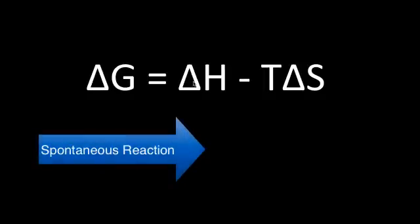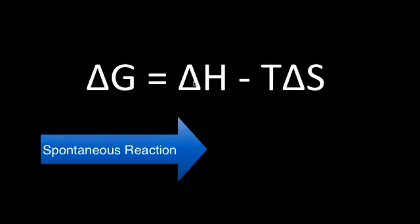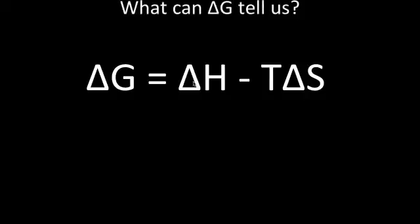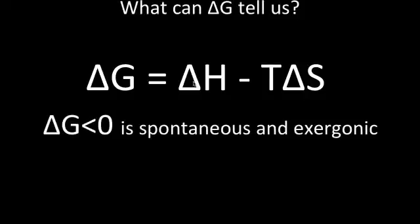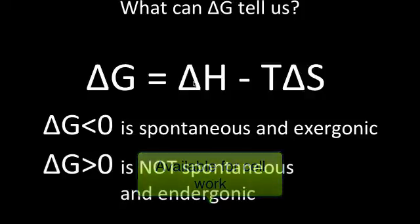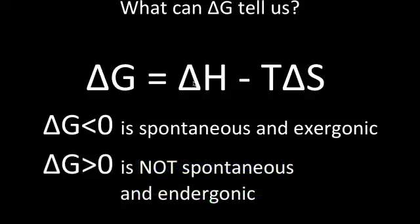Once we know the change in free energy of a reaction, we can use it to predict whether the reaction will be spontaneous or not. Remember, a spontaneous reaction is one that, once activated, will continue on its own without any additional energy. What does knowing the change in free energy tell us? Well, if the change in free energy is less than zero or negative, the reaction will be spontaneous and therefore exergonic. These reactions release the free energy and it's available to do the work of the cell. The reaction that results in a positive change in free energy is not spontaneous and therefore endergonic.